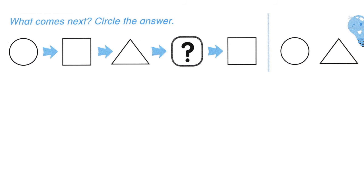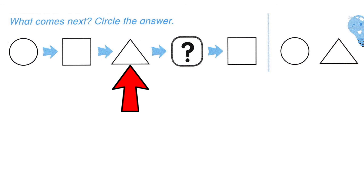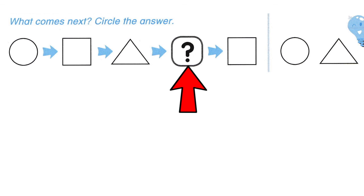What comes next? Circle the answer. The first one is a circle, square, triangle. What comes next? The answer is circle.